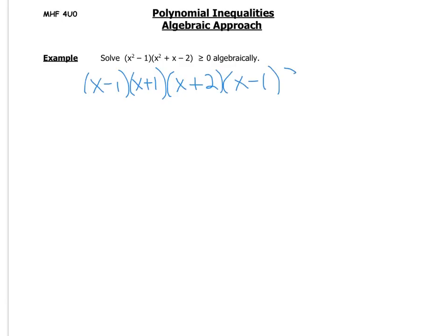So we want to know when is that greater than or equal to 0. Okay, so we know that our x-intercepts or our zeros are x equals 1, negative 1, negative 2. And so we have that 1 again. We only need to write it the one time. So we're going to set up this thing called an interval table. You'll see it sometimes different from different teachers or in the textbook.